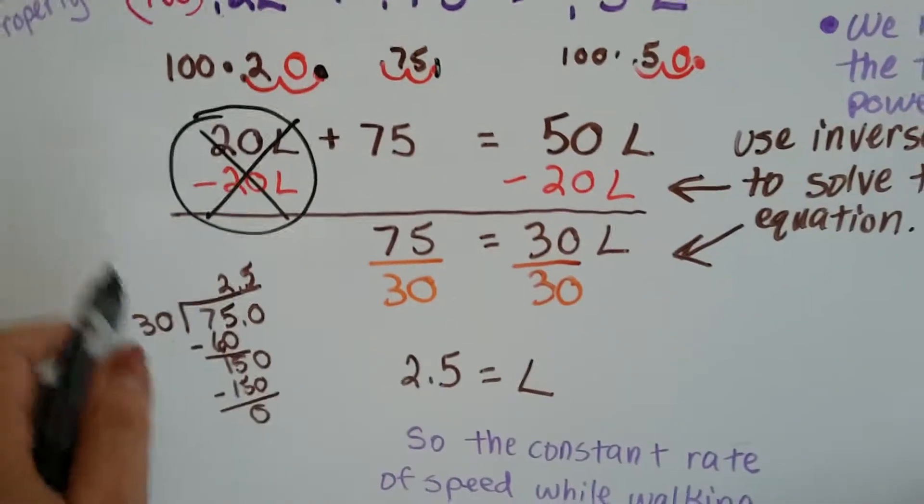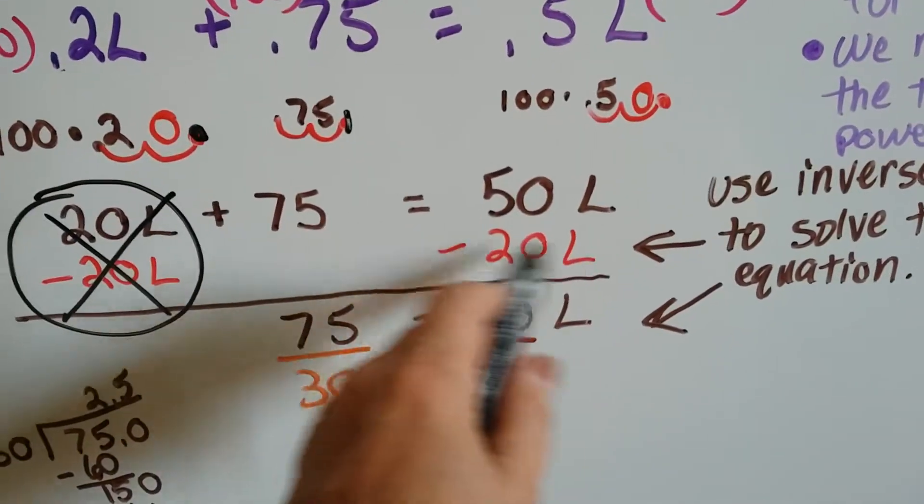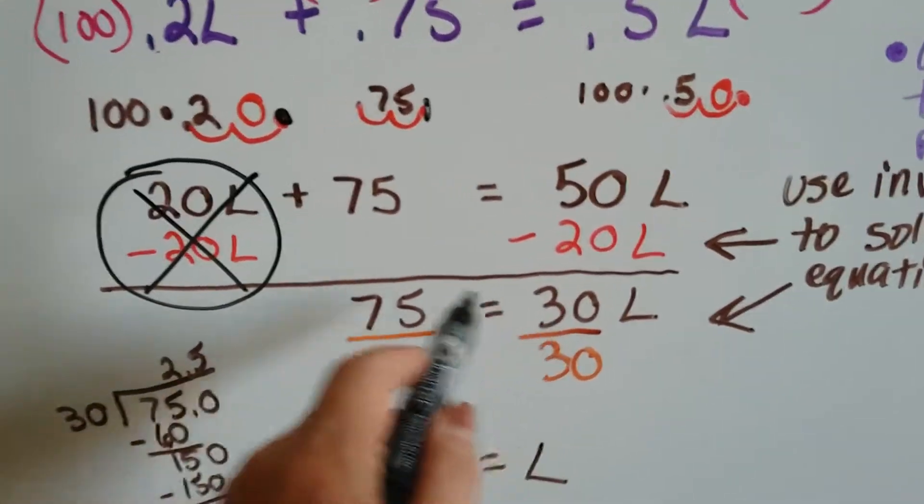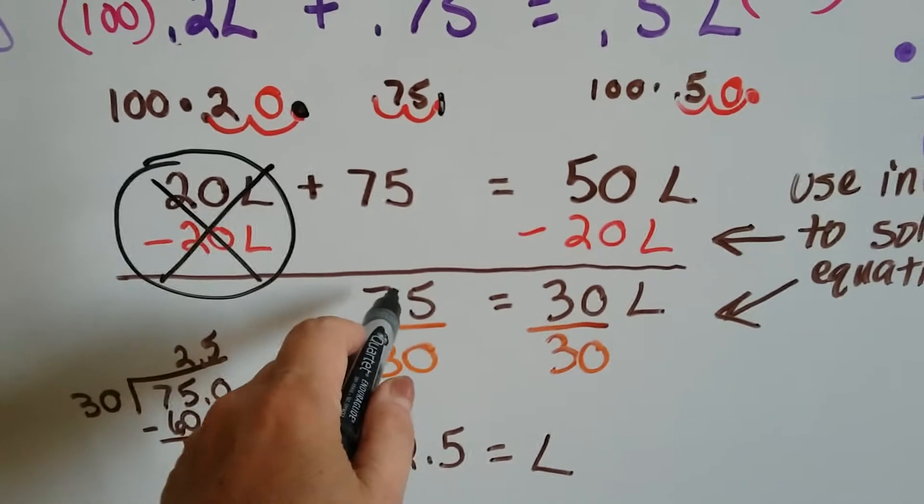We've eliminated it. And then 50L minus 20L is 30L, and then we drop down the 75.